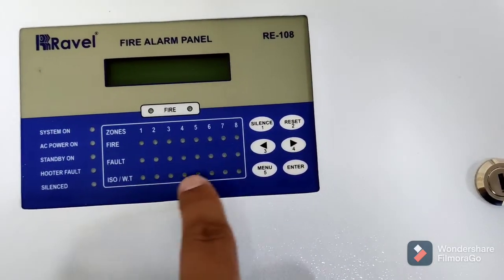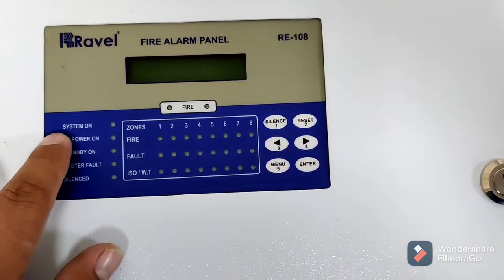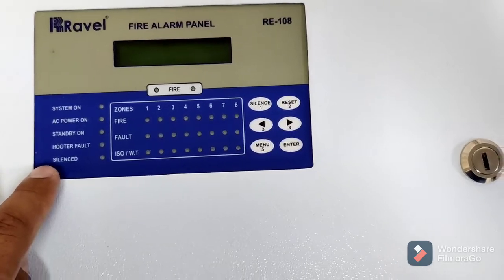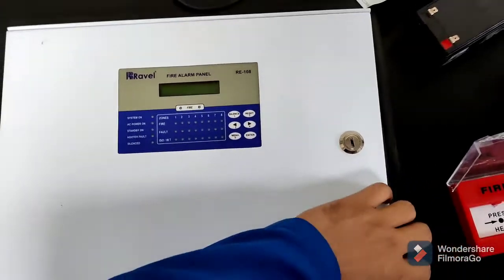And also every button: menu and enter. There are fire zones you can see, fault, and okay. Also you can see there are indicators for the system on, AC power on, standby on. Indicators for everything you can see.